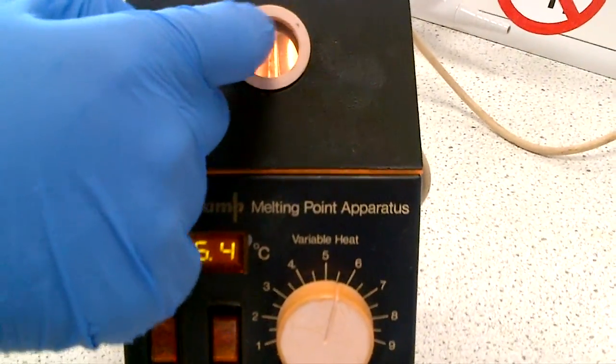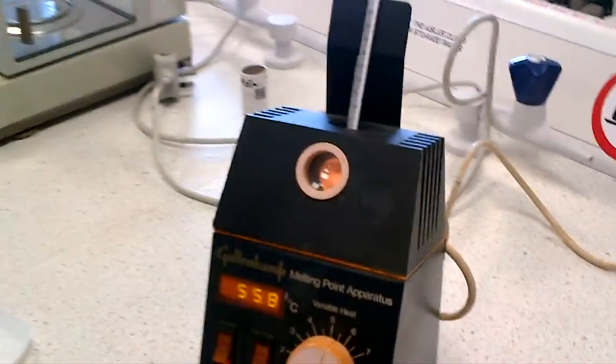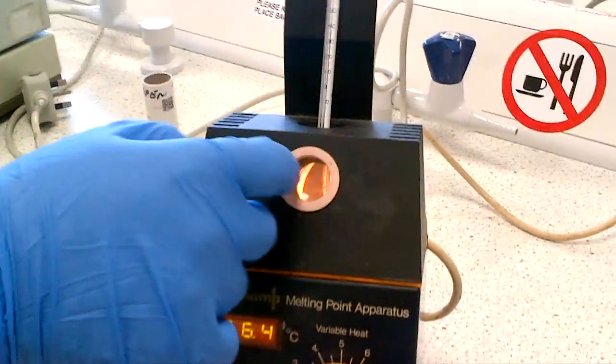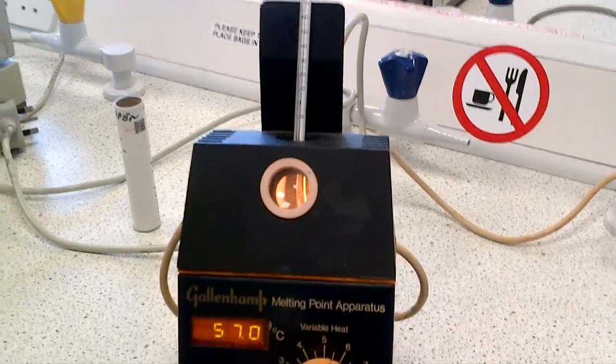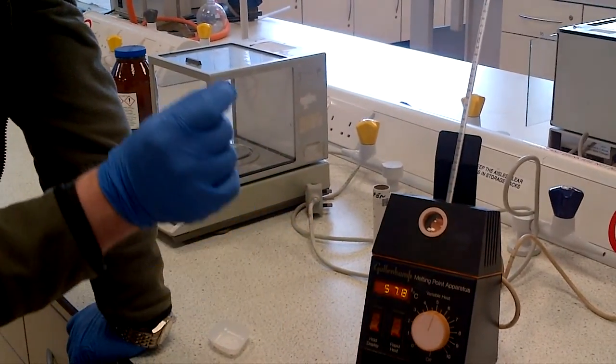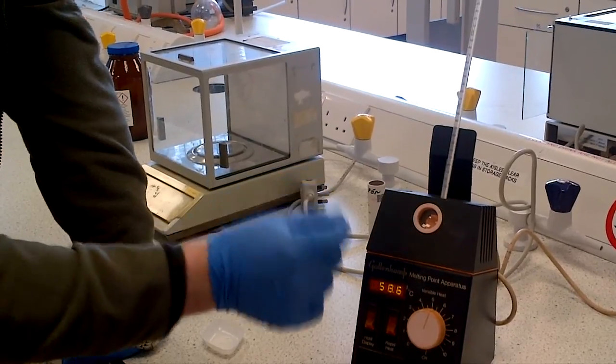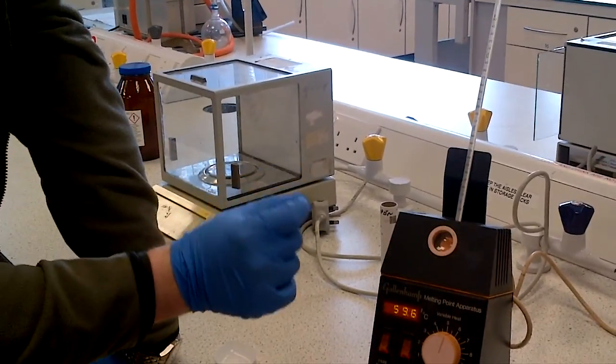So you always look, and I'm just going to peer into view, you always keep looking at the sample. Don't walk away, don't go and chat to your friends, don't go for a cigarette break, don't go to a trip to the toilet, keep looking. And you need to look for the first sign of melting, so that's when the first crystal starts to go gloopy, that's the start of the melting point range, and the melting point range finishes when the last crystal goes into that liquor in the capillary tube.